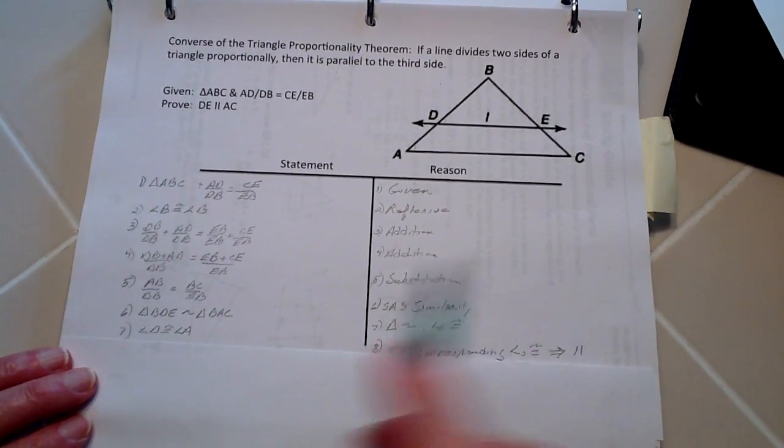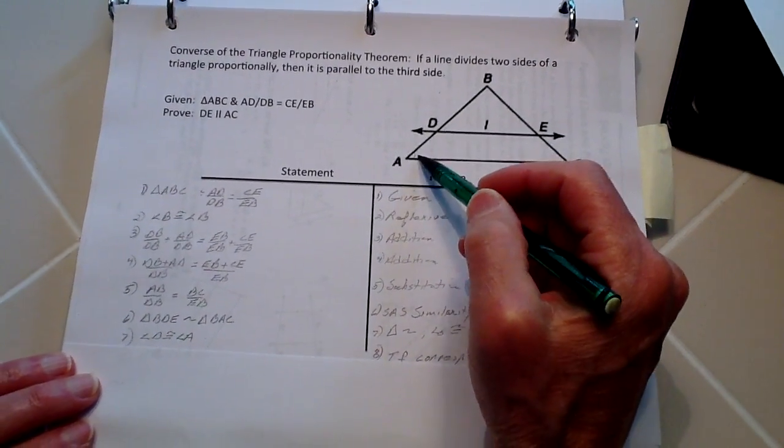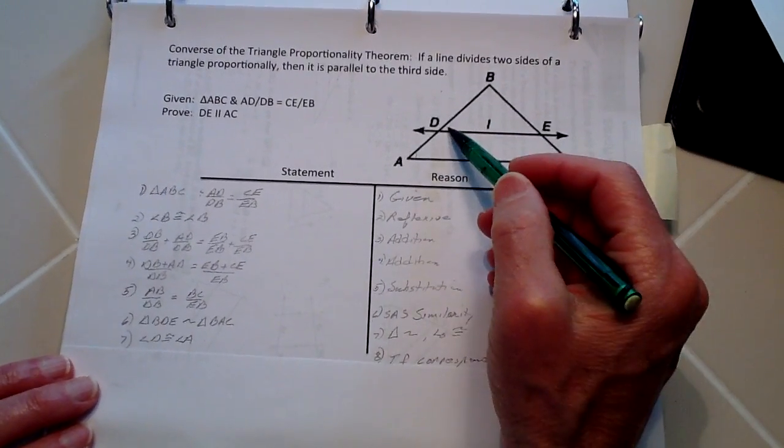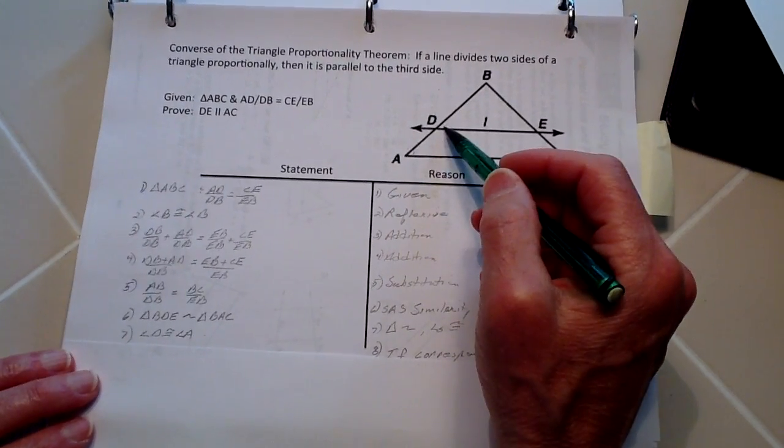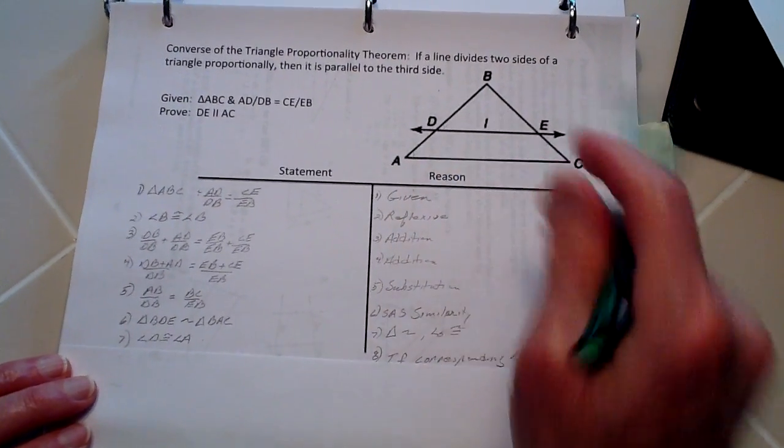From that, we know that angle D and A have to be congruent because they are similar triangles, and similar triangles, they have congruent angles.